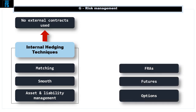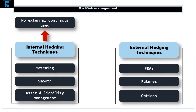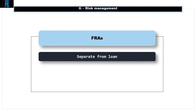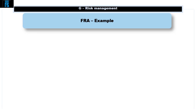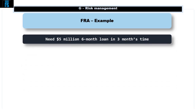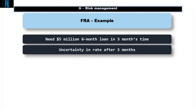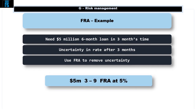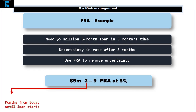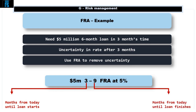A forward rate agreement, or FRA, is an example of an external hedging technique. An FRA is separate from the loan but acts as a top-up payment or receipt. Suppose it's the 1st of January and as a result of our cash flow forecasting we see we need a $5 million six-month loan in three months' time. Even if we were to fix the rate on that loan when we sign it in three months' time, we couldn't say now on the 1st of January what rate we'll get. This is where we can use an FRA. The bank offers us a $5 million 3-to-9 FRA at 5%. The 3-to-9 refers to the number of months until the loan starts from today and the number of months from today until the loan finishes.